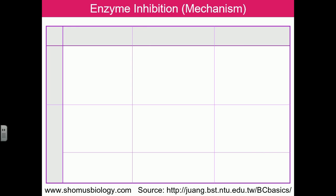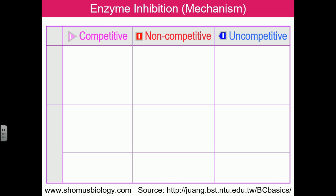Enzyme inhibition can be divided into three different parts. First is competitive inhibition, second is non-competitive inhibition, and third is uncompetitive inhibition. Looking at this table, we will see a cartoon guide along with the equation and description of each process.